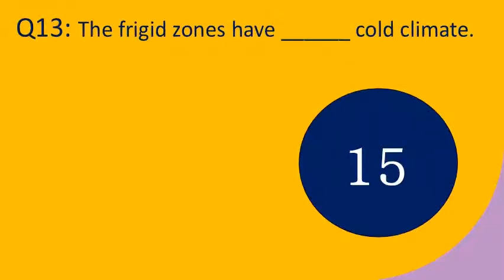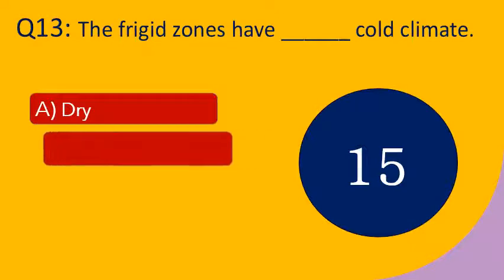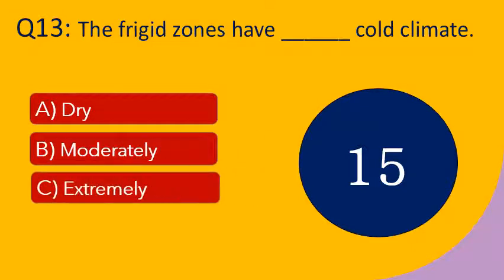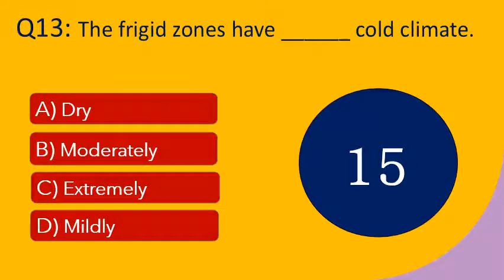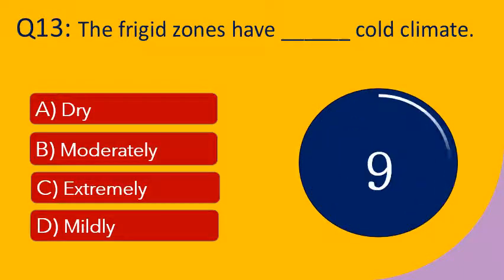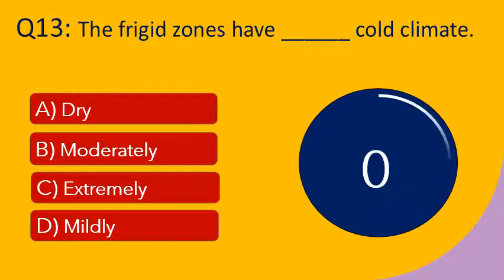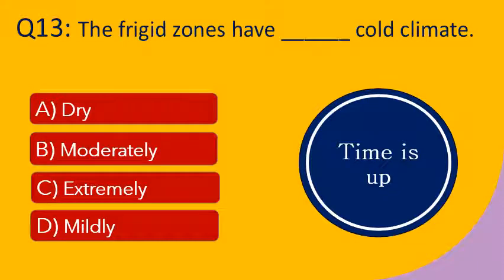Question number 13: The frigid zones have dash cold climate. Options are A. Dry, B. Moderately, C. Extremely, and D. Mildly. Your time starts now. Your time is up. The right answer is extremely. The frigid zones have extremely cold climate.